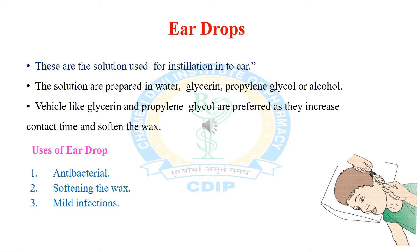First we will discuss ear drops. Ear drops are solutions used for instillation into the ear or ear cavity, instilled with a dropper. The solution is generally prepared in water, glycerin, propylene glycol, or alcohol. Vehicles like glycerin and propylene glycol are preferred because they increase contact time and soften the ear wax.